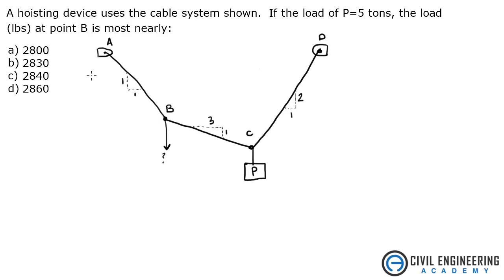It says a hoisting device uses the cable system shown that the load of P equals 5 tons, so this load P is 5 tons, the load in pounds at point B is most nearly what? So we're asked to solve this unknown load here.